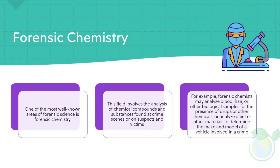Forensic Chemistry. One of the most well-known areas of forensic science is forensic chemistry. This field involves the analysis of chemical compounds and substances found at crime scenes or on suspects and victims. For example, forensic chemists may analyze blood, hair, or other biological samples for the presence of drugs or other chemicals, or analyze paint or other materials to determine the make and model of a vehicle involved in a crime.